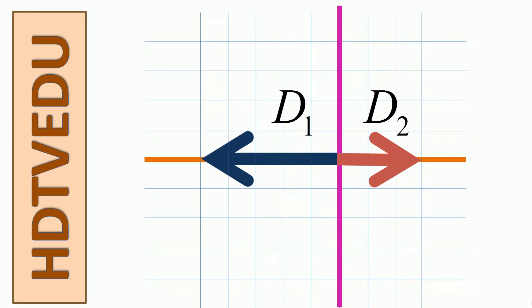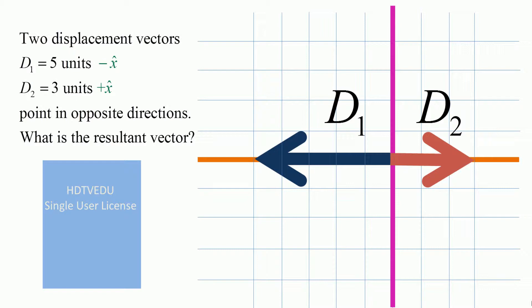Here we have two vectors, d1 and d2. d1 is pointing horizontally to the left, and d2 is pointing to the right. These are two displacement vectors. d1 equals 5 units to the left, and d2 is equal to 3 units horizontally to the right.